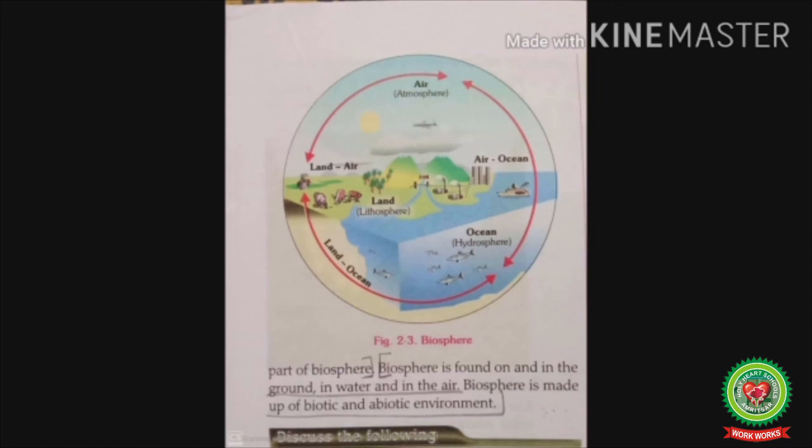The biosphere is made up of biotic and abiotic environments. Biotic means living beings like plants, animals, and bacteria. Abiotic means non-living things like the sun, temperature, water, atmosphere, and all the gases. There is a relation between biotic and abiotic: living beings depend on non-living things, and non-living things are directly or indirectly dependent on living things.